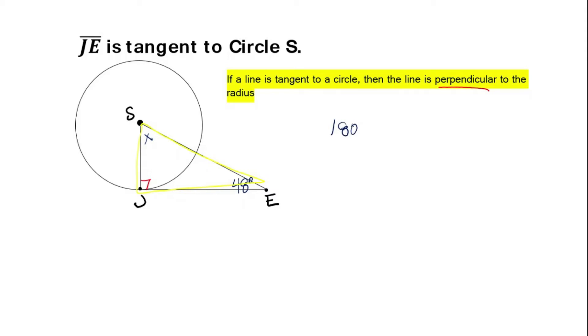So to solve for x we just need to do 180 minus the other two angles, so minus 48 minus 90, and that gives you 42. So x is equal to 42. Pretty straightforward, right?